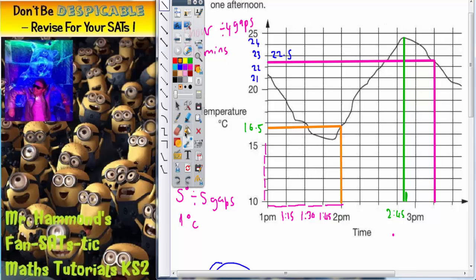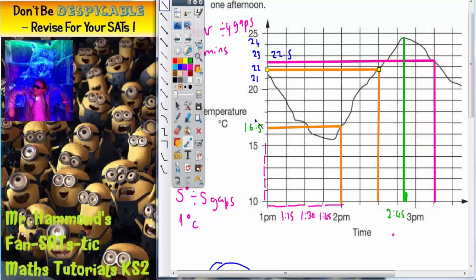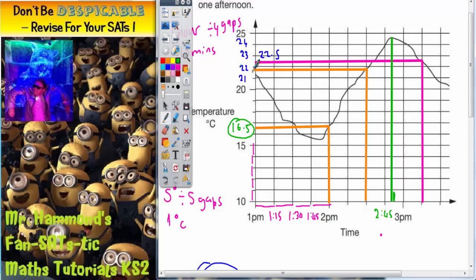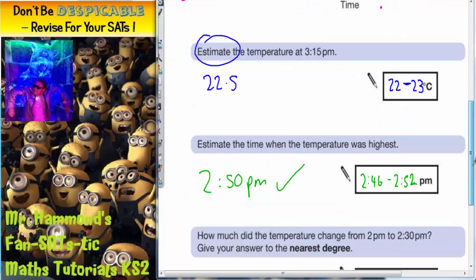And now we need to do exactly the same for 2:30 p.m. So if this is 2, 2:15, 2:30. So we're looking for this change from this temperature, which is 16.5, to this temperature, which is about 21.5. So from 16.5 to 21.5.